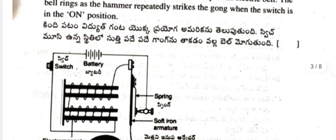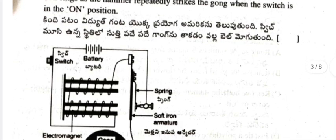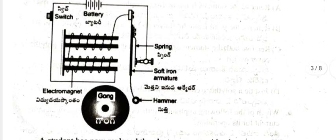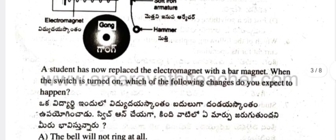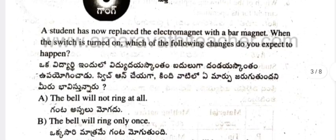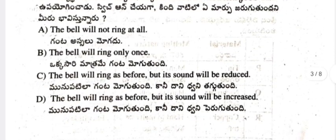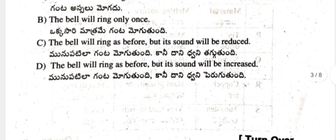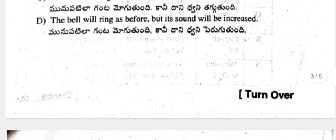Question 4: The figure shows the experimental setup of an electric bell. The bell rings as the hammer repeatedly strikes the gong when the switch is in the on position. A student has now replaced the electromagnet with a bar magnet. When the switch is turned on, which of the following changes do you expect? (a) The bell will not ring at all. (b) The bell will ring only once. (c) The bell will ring as before but its sound will be reduced. (d) The bell will ring as before but its sound will be increased.